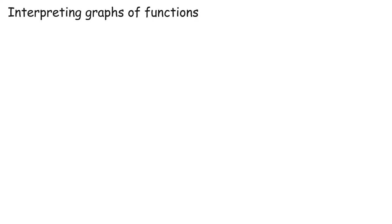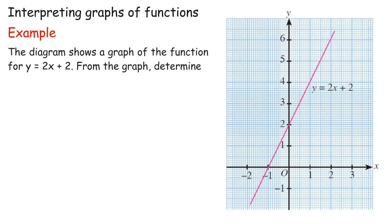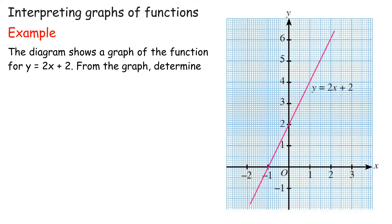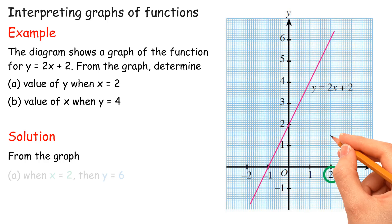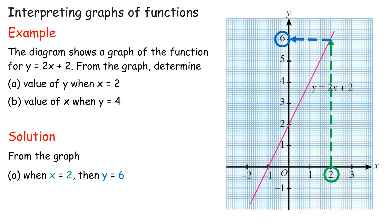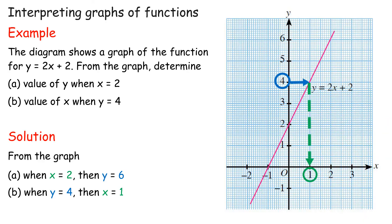Interpreting graphs of functions. Example: The diagram shows a graph of the function y equals 2x plus 2. From the graph, determine: A) the value of y when x equals 2, and B) the value of x when y equals 4. Solution from the graph: A) when x equals 2, then y equals 6. B) when y equals 4, then x equals 1.